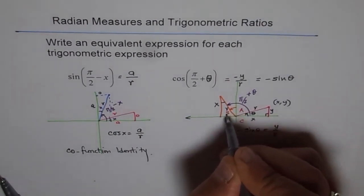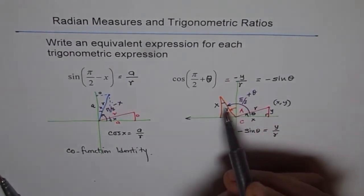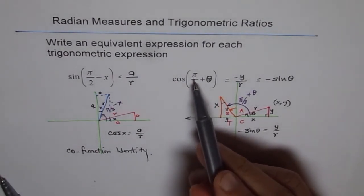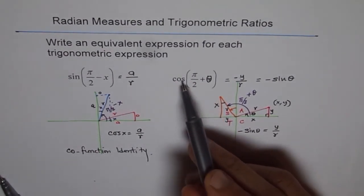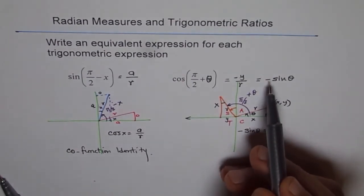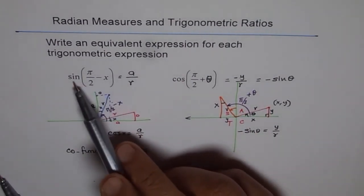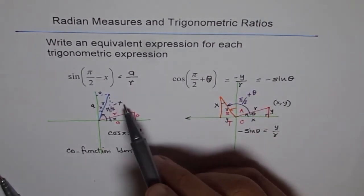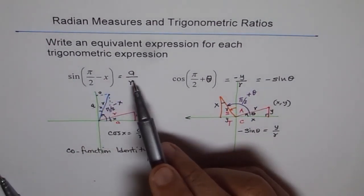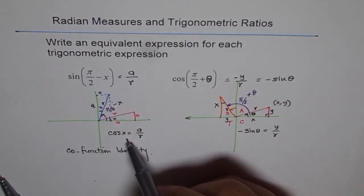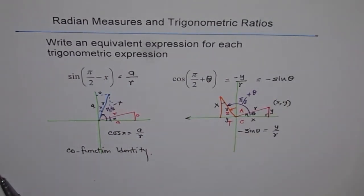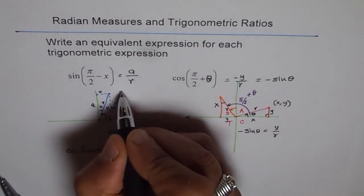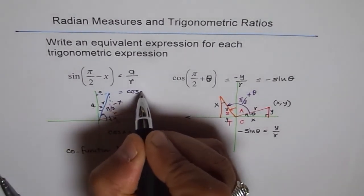That is decided with CAST rule. C, A, S, T. We were cos π/2 plus theta in this quadrant. In this quadrant, cos is negative. So, we have negative sin. In the first case, sin π/2 minus x. We were in the first quadrant. In first quadrant, all are positive. So, cos x was positive. So, depending on in which quadrant we are, this value will be positive or negative. Do you understand? So, let me write here, this is equivalent to cos of x.